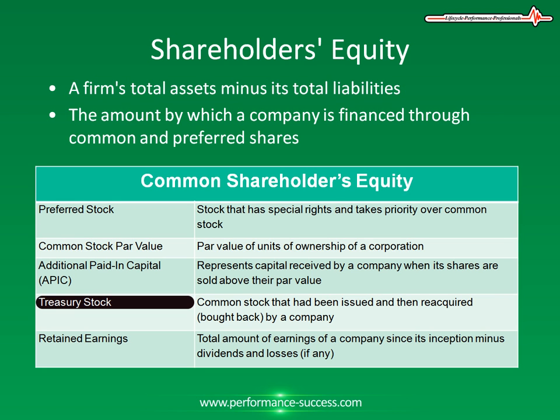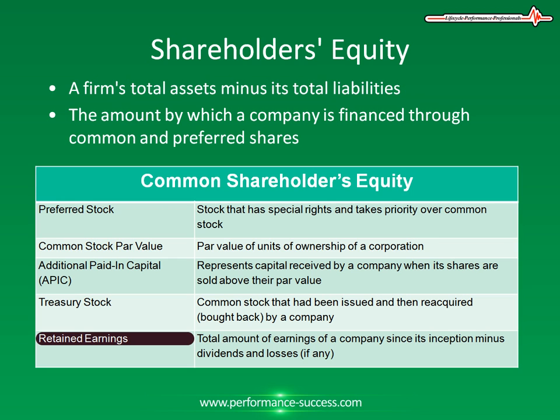Next, you have treasury stock, and this is common stock that has been issued and then reacquired or bought back by a company. And last, you have retained earnings, and this is the total amount of earnings of a company since its inception minus dividends and losses, if any.